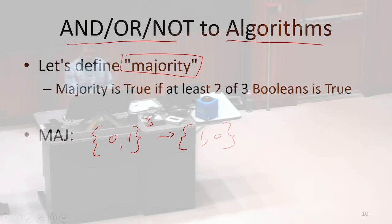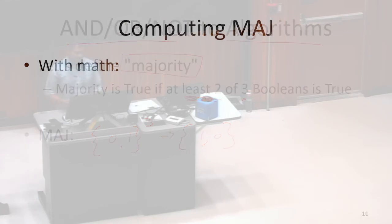And we want it to be true whenever at least 2 of those 3 bits were 1. How would I compute majority with, let's say, math, with Boolean logic? So I want to compute the majority function on A, B, and C. So how would I do that?